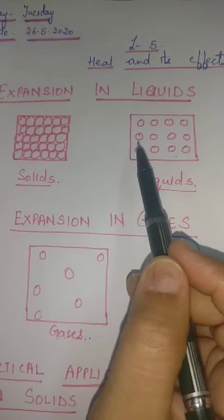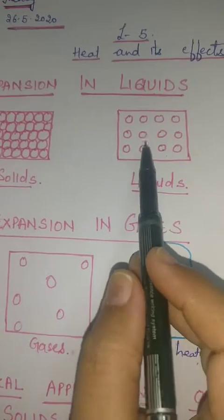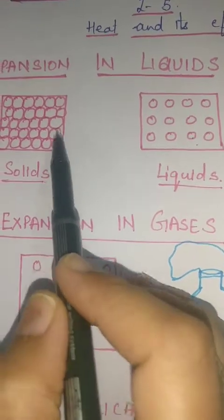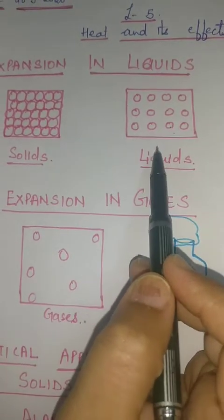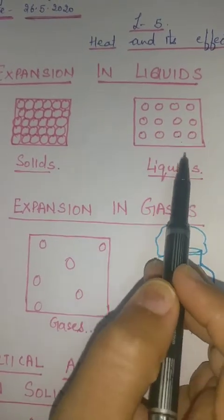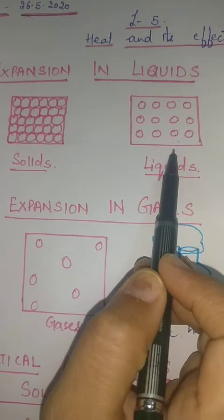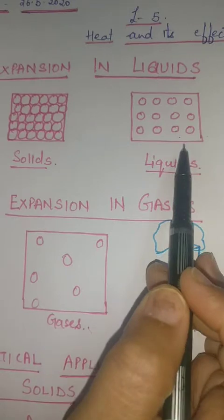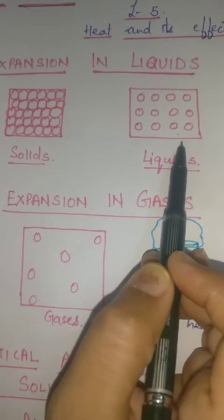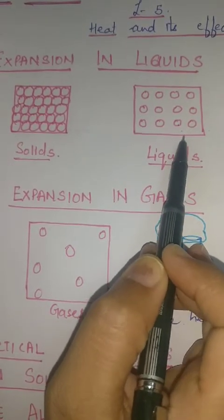What happens when a liquid is heated? The molecules of the liquid are packed less closely to each other as compared to solids, so the space between the molecules in the liquid is more. On heating, the vibrations of molecules increase, intra-molecular forces increase, and the average distance between them also increases. This results in an increase in the volume of liquids. Thus, the liquid expands more on heating than solids.